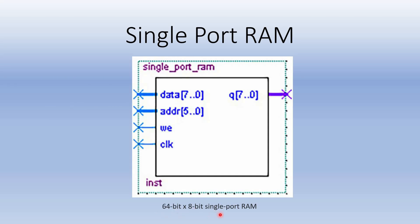It is a 64-bit by 8-bit single port RAM, meaning we have 64 locations in the RAM and at each location we can store 8-bit data. It consists of 5 ports total — 4 input ports and 1 output port. The data input port is 8 bits wide. The address input port requires 6 bits, as 6 bits are sufficient to address 2 to the power 6, that is 64 locations. WE is the write enable pin — high means write mode, low means read mode. CLK is for clock cycle and Q is the 8-bit output data port.